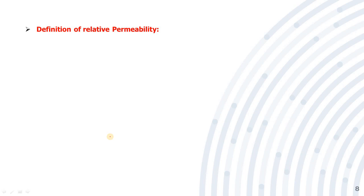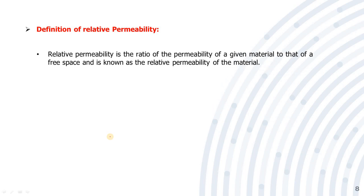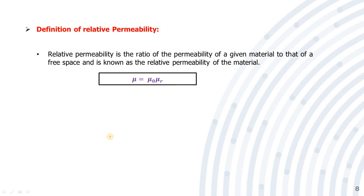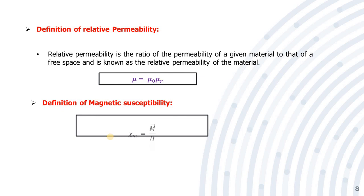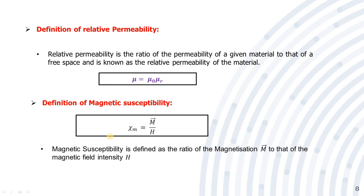Relative permeability is defined as the ratio of the permeability of a given material to that of free space: μᵣ = μ/μ₀. Magnetic susceptibility is defined as the ratio of magnetization to magnetic field intensity: χₘ = M/H.